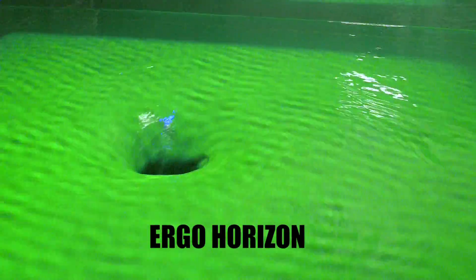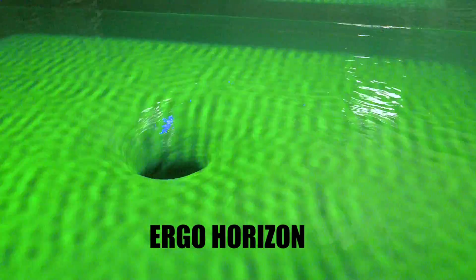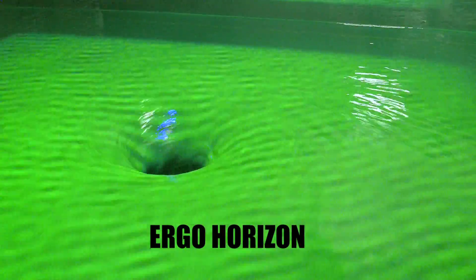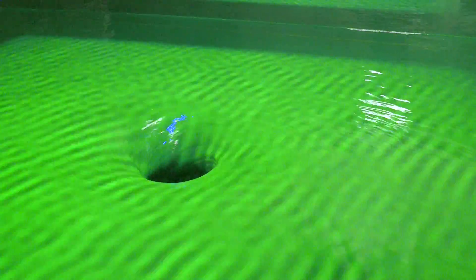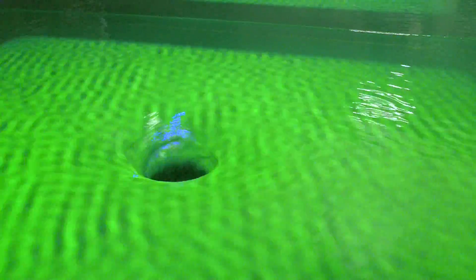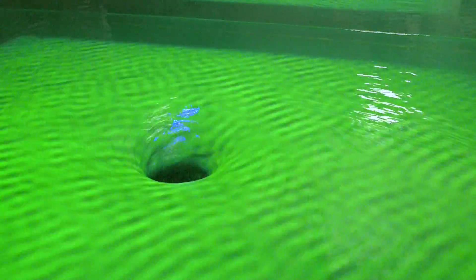So any fluctuation that comes inside this ergo horizon cannot counter-propagate to the fluid flow. It gets dragged along, it's called frame dragging, but it can still escape. There is another point where the radial velocity, only the radial component, is faster than the little ripple on the surface, and that's called the analog event horizon.